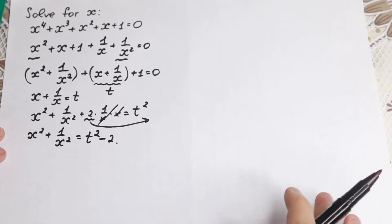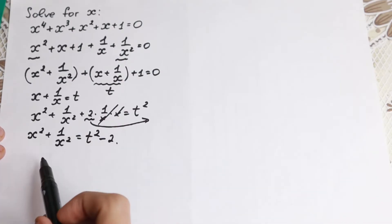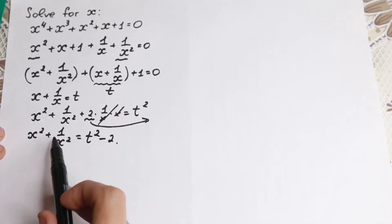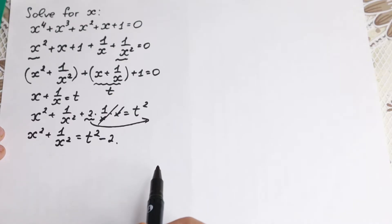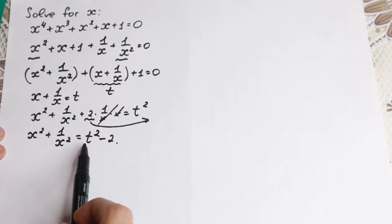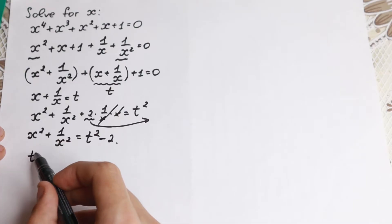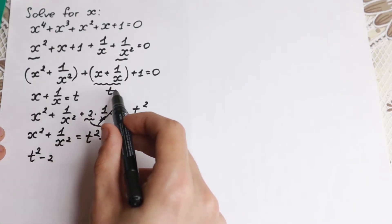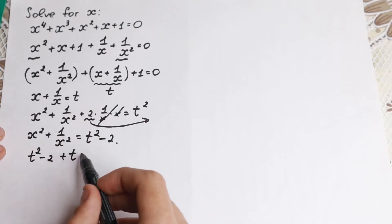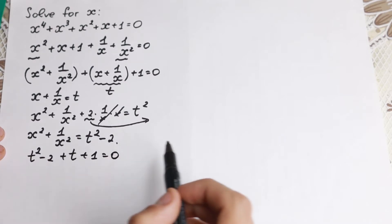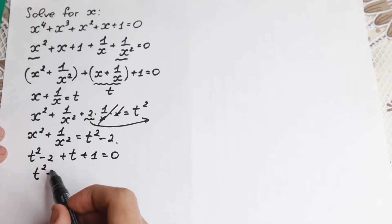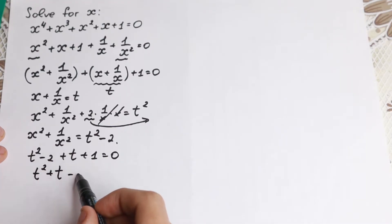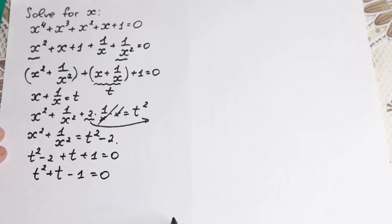Now we can substitute: replacing x² + 1/x² with t² − 2, and x + 1/x with t, we get t² − 2 plus t plus 1 equal to 0. Simplifying and reordering: t² + t − 1 equal to 0.